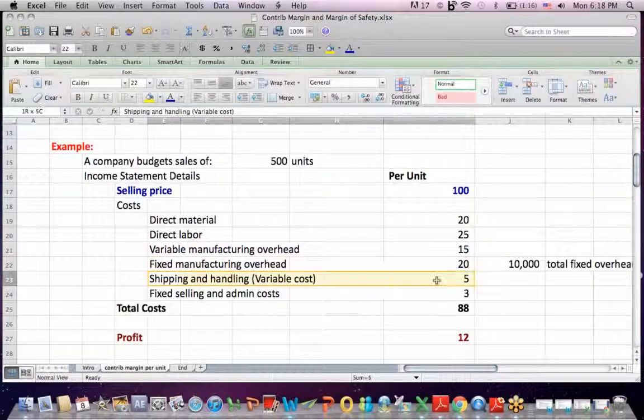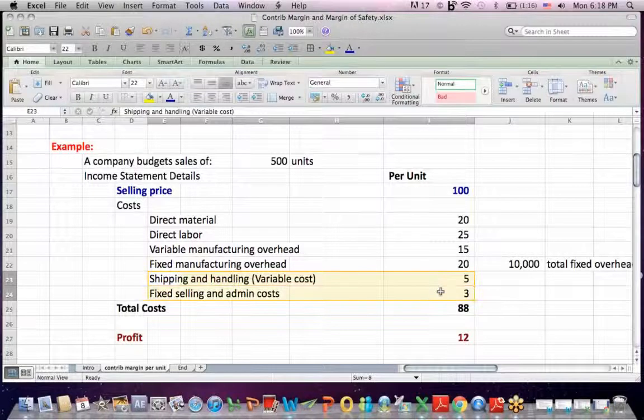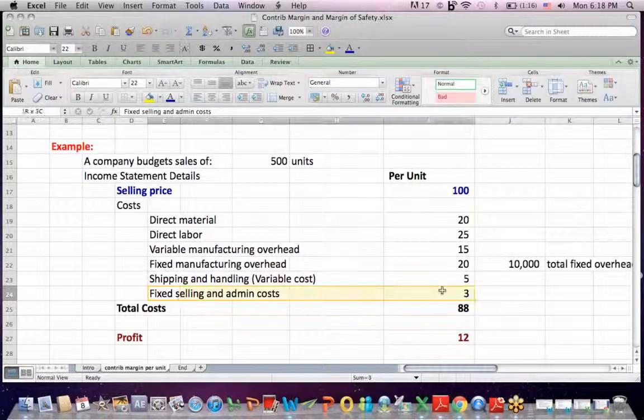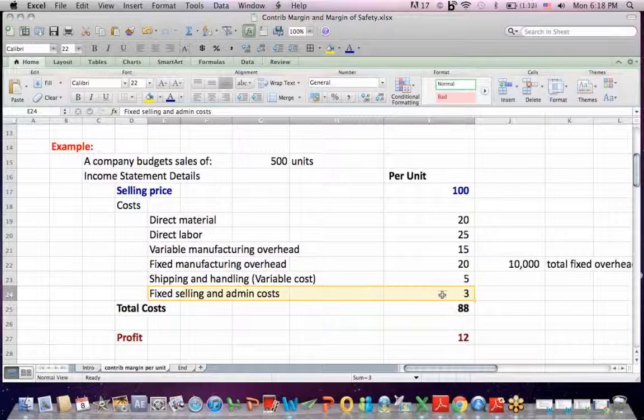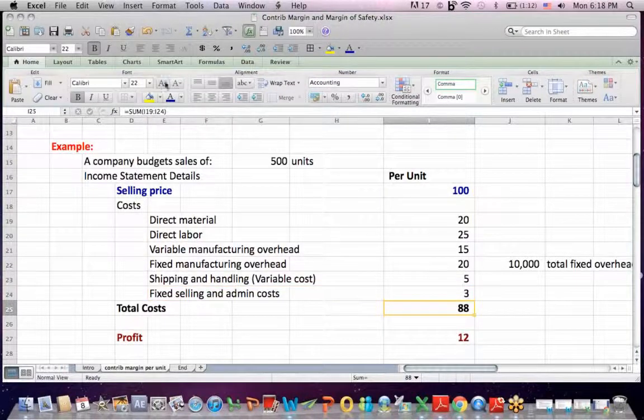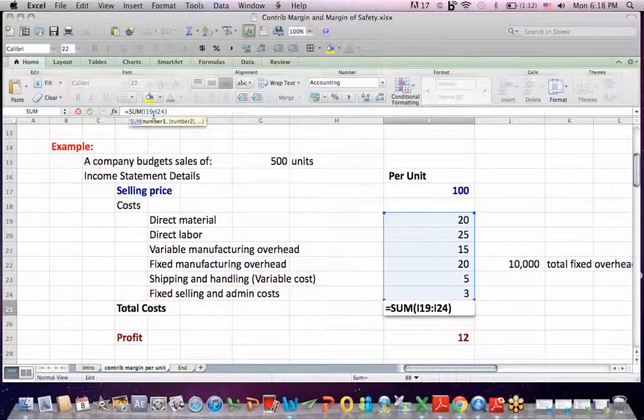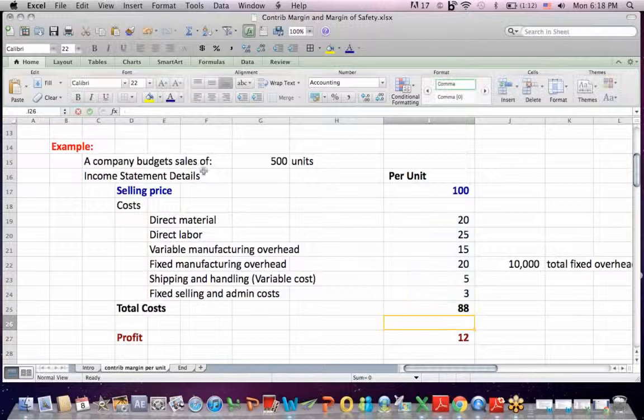fixed manufacturing overhead, selling and handling, which would vary with the number of units you handle, variable and a fixed selling and admin cost that we look at on a per unit basis. So our total cost, if I add up the cost per unit numbers is 88.